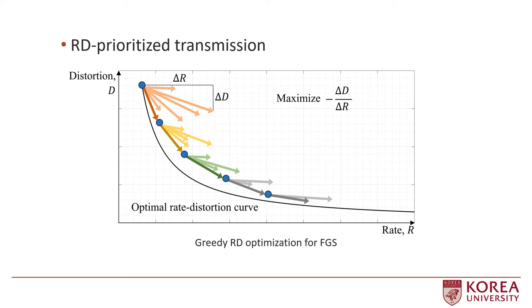The transmission of a trit increases the rate and decreases the distortion. The goal is to minimize delta R and maximize minus delta D simultaneously. We use the ratio of these two terms for RD prioritized transmission.